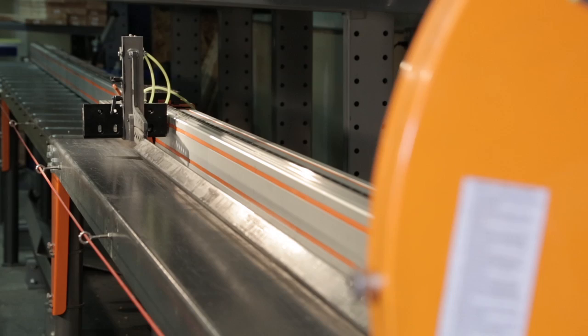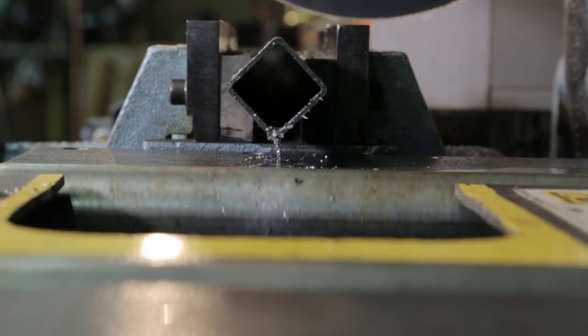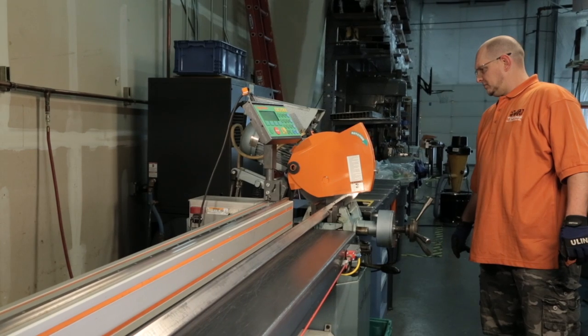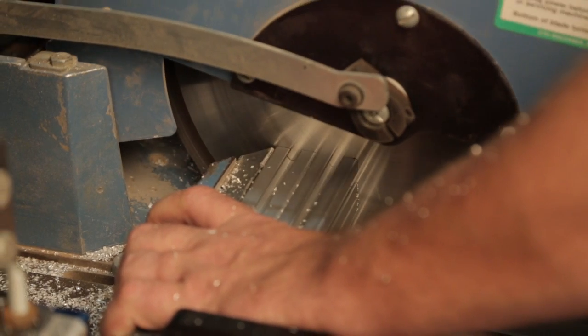Simply add the TigerStop to an existing saw station, drill or punch and you convert your machine into an automation solution for a huge jump in efficiency and accuracy.